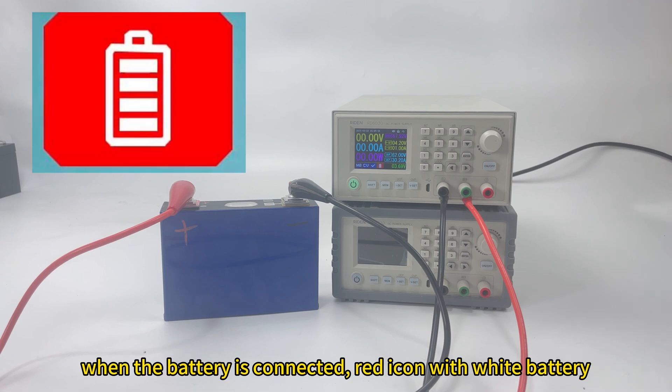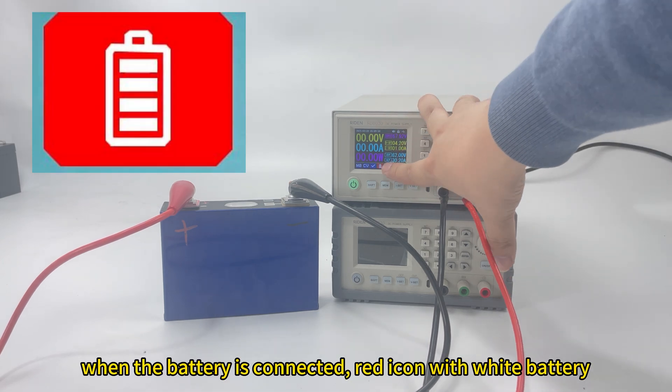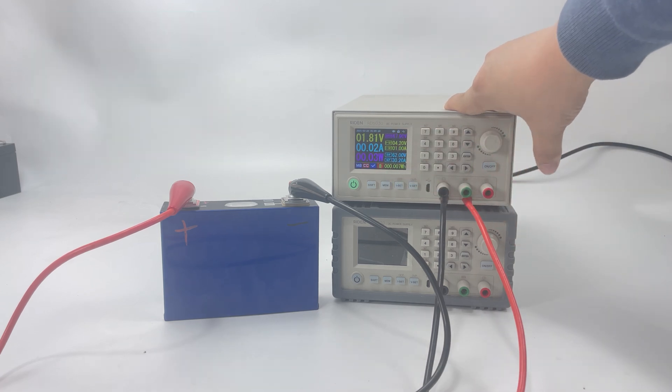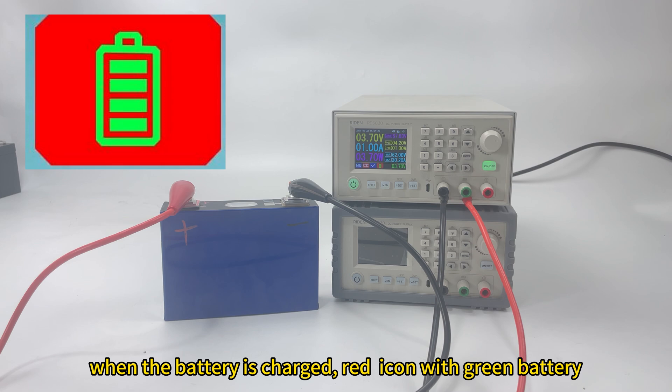When the battery is connected, the icon turns red and the battery is still white. When it is charging, the icon is red and the battery is green.